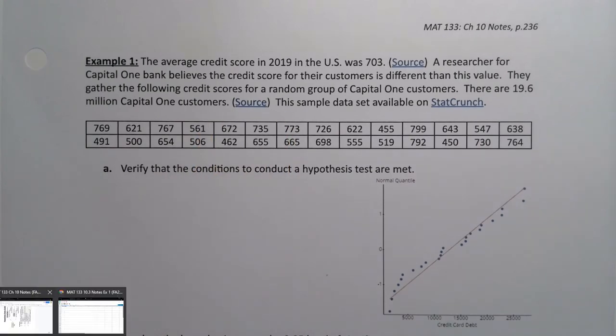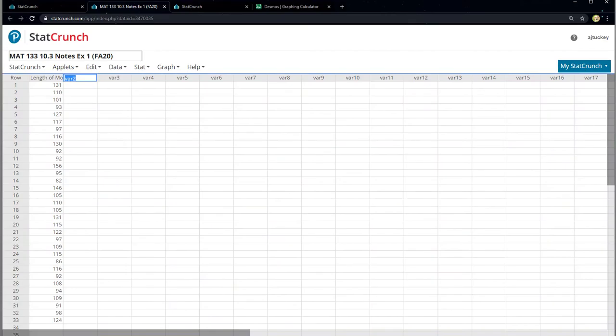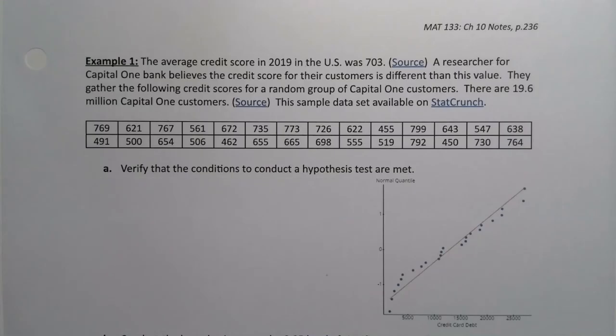This data set is available on StatCrunch. I'm actually going to change that link so that way you can tell what it is. It's 10.3 notes example one, so EX1. So if you look this up, actually, if you just look up 133, 10.3, you'll find this data set. Sorry, I had the wrong data set labeled. This is the correct data set. So it has the credit scores, 769, 621, 767, and so on.